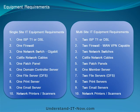For the multi-site setup you're going to need two internet connections — T1 or DSL — and two firewalls, one at each location, which must be WAN VPN-capable. You'll need two gigabit network switches with gigabit network cards on the client devices, Category 6E network cables, and two patch panels. For servers you'll need one member server, two file servers, two print servers, two email servers, and of course printers and scanners.